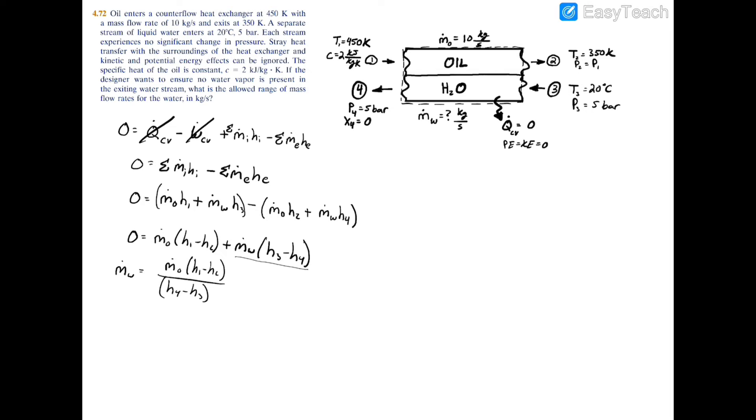And then you have a negative m dot w, so when you divide by negative one you flip the signs of your h3 and h4 and you're left with h4 minus h3 on the bottom in the denominator.